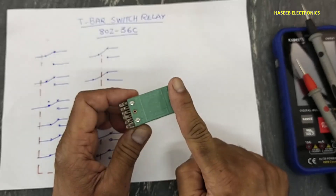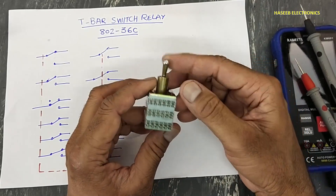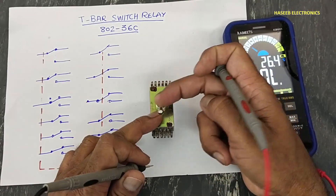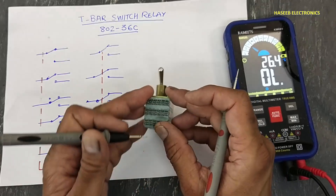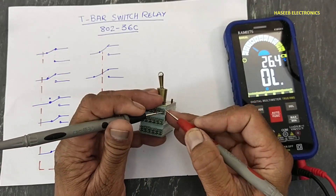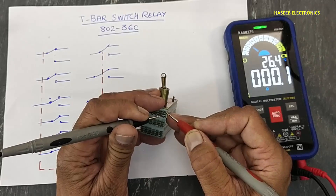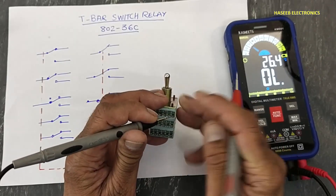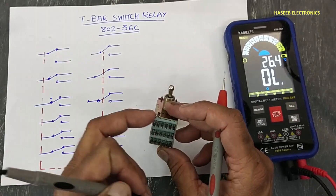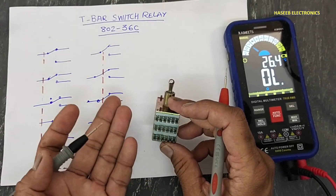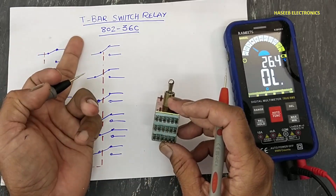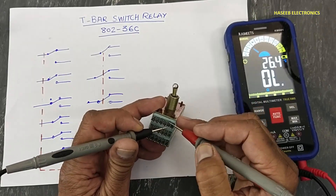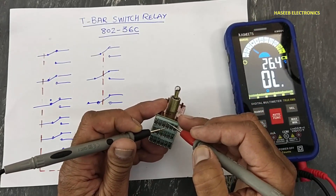When the switch is in the OFF position, its common point will make connection with the upper one and it will open with the lower one. All 36 contacts will switch together — either it is normally closed point or normally open point. Now all the connections will be closed on the top side.